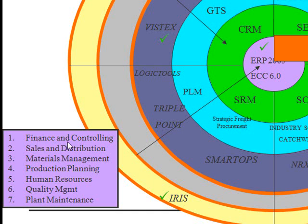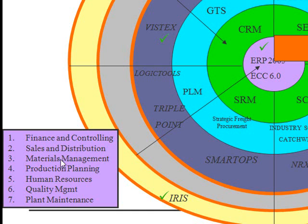ECC 6.0 contains Finance and Controlling, Sales and Distribution, Materials Management, Production Planning, Human Resources, Quality Management, and Plant Maintenance — these are some of the core modules. The top four — Finance and Controlling, Sales and Distribution, Materials Management, and Production Planning — are the most popular modules implemented in any SAP implementation.